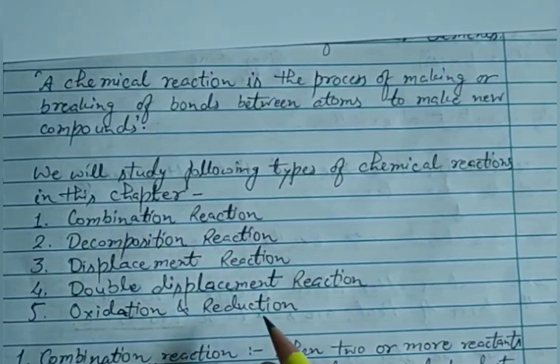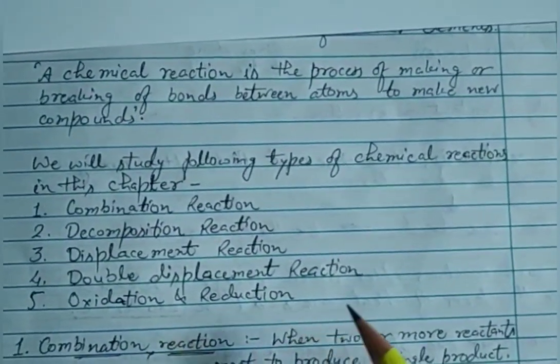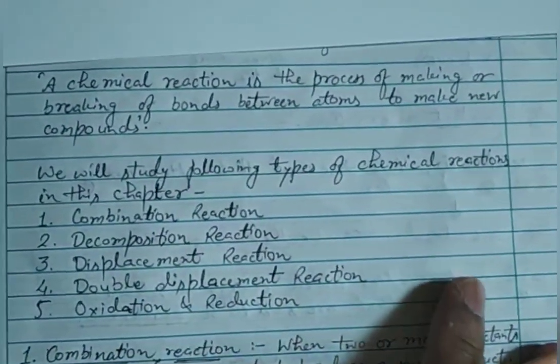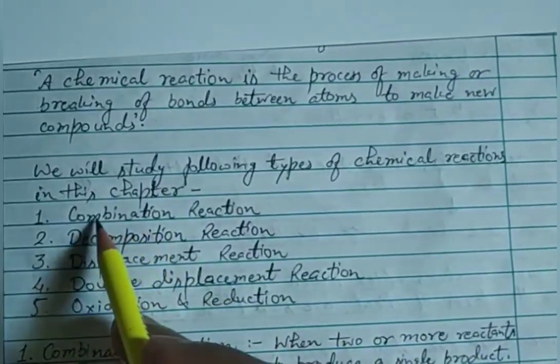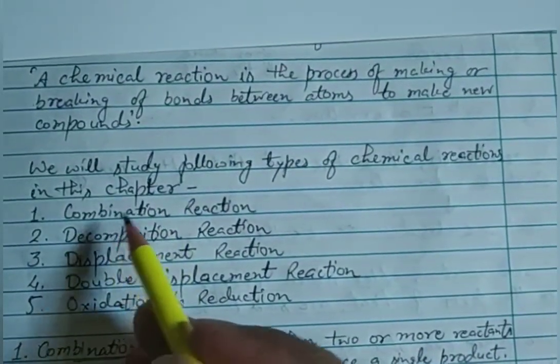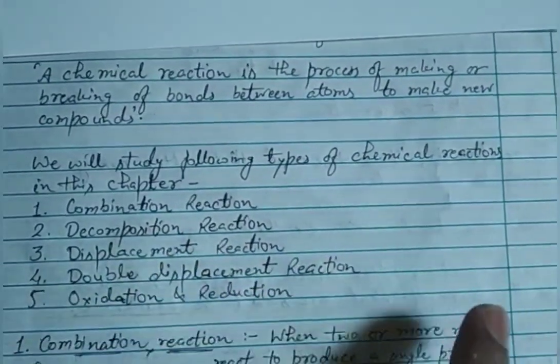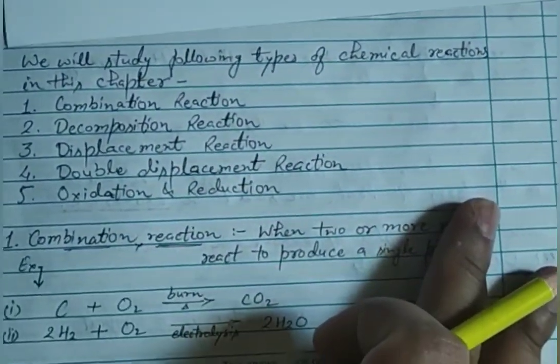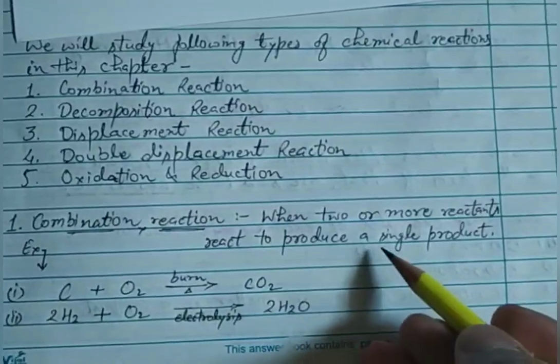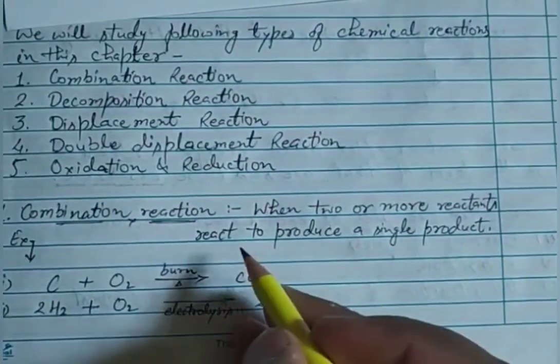First, we'll start with combination reaction. As the name suggests, combination means joining of something. In chemical terms, a combination reaction occurs when two or more reactants react to produce a single product.